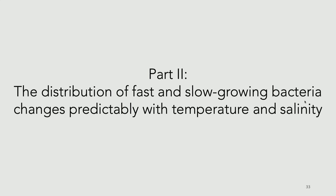The second part of the talk is actually trying to extend this prediction to natural world settings. What I will show you today is that when we look at the distribution of fast and slow growers in a natural setting, we see that it changes predictably with temperature, and we think it also changes predictably with salinity. This second part is an ongoing project with preliminary results, but the first part is published and you can look it up.